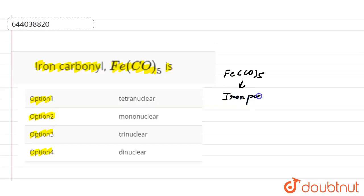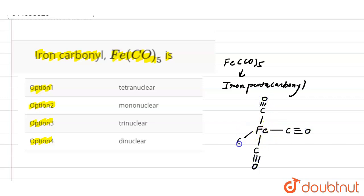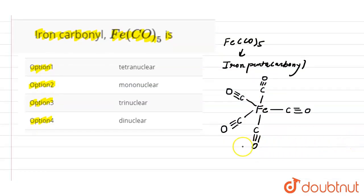The structural formula for iron carbonyl is Fe(CO)₅. In the structure, Fe is the central metal atom, and five carbonyl groups are attached to it. These five carbonyl groups are the ligands, and this is the structural form of iron carbonyl where the Fe atom is surrounded by five carbonyl ligands.